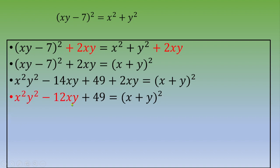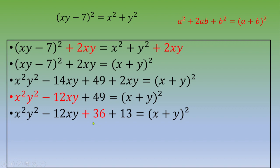Focusing on the first two terms: the first term is a perfect square — this is (xy) squared — and the second term, instead of minus 12xy, can be rewritten as 2 times 6 times xy. This is the beginning of another remarkable identity: a squared minus 2ab plus b squared equals (a minus b) squared. The b squared term would be 36, so we transform 49 into 36 plus 13, giving us (xy minus 6) squared plus 13 equals (x plus y) squared.